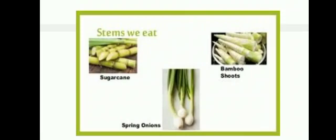Modified underground stems of some plants are also used as a source of food. For example, onion, potato, ginger, garlic, turmeric etc. We get sugar and jaggery from the stem of sugarcane. The stem of the banana plant is also used to make many tasty dishes in southern India.